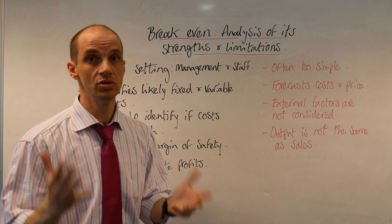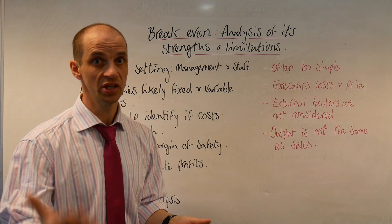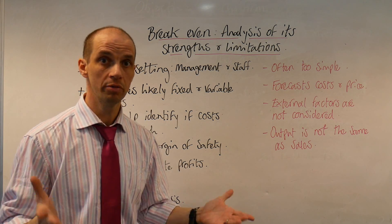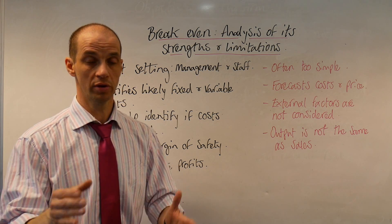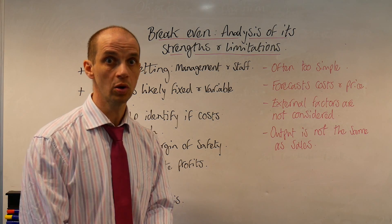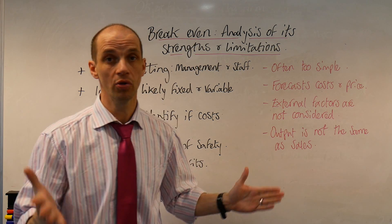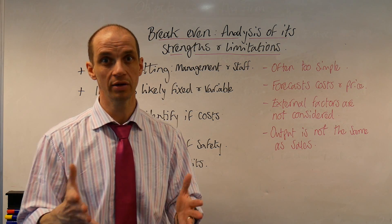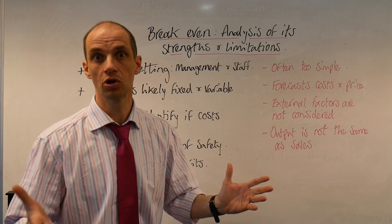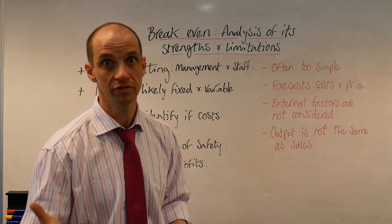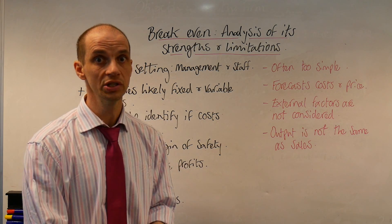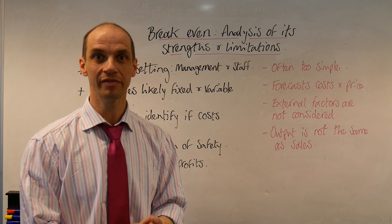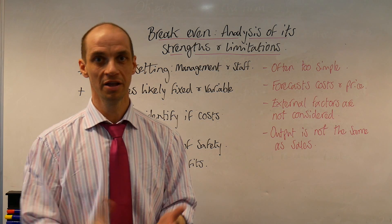Finally, output is not the same as sales that are actually achieved. While the breakeven graph refers to output along the horizontal axis, it's not the same as actually achieving a given level of sales. If you end up with surplus stock, you're likely to have to discount that stock at a lower price level, and that of course alters your whole breakeven analysis.